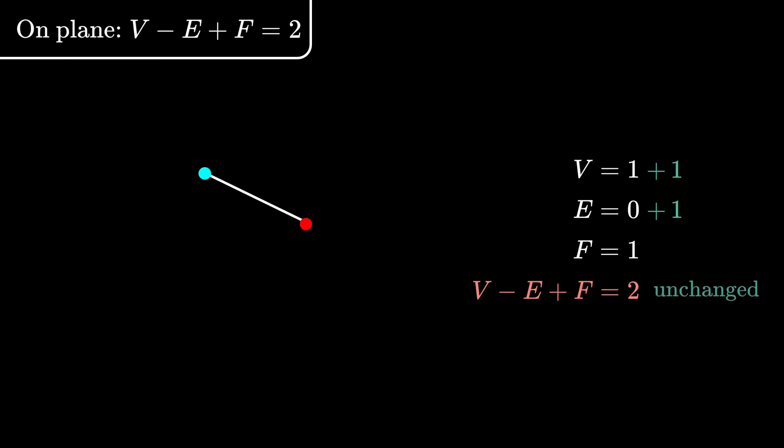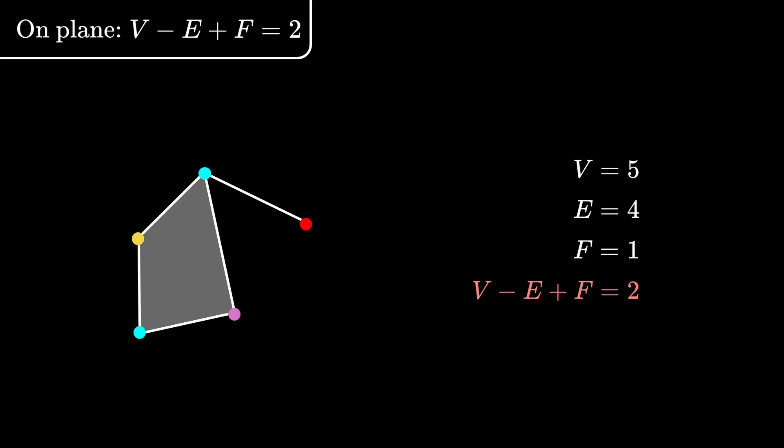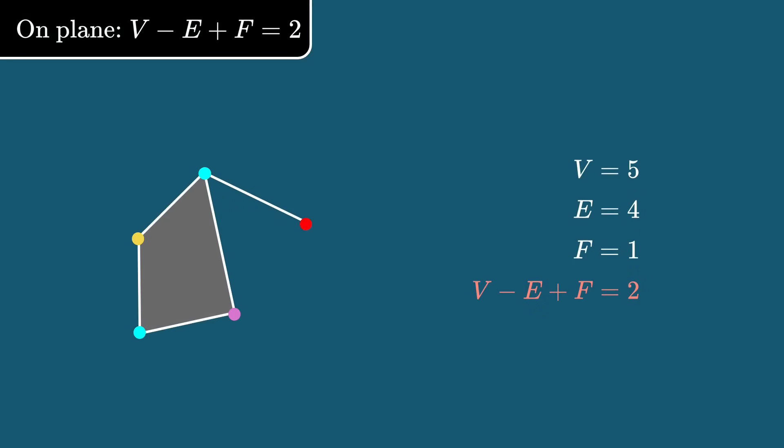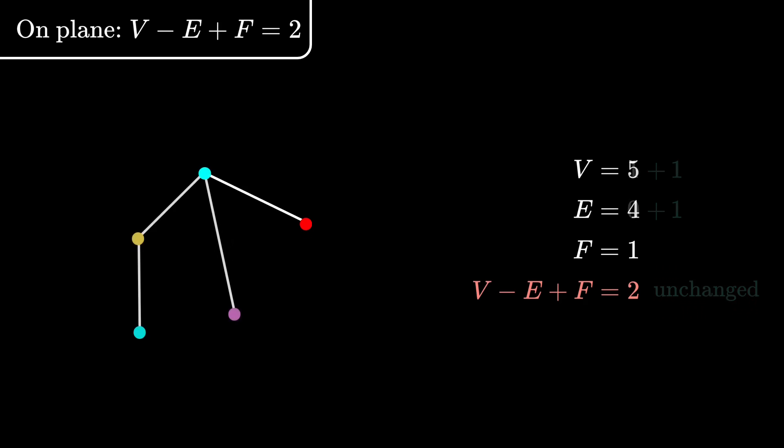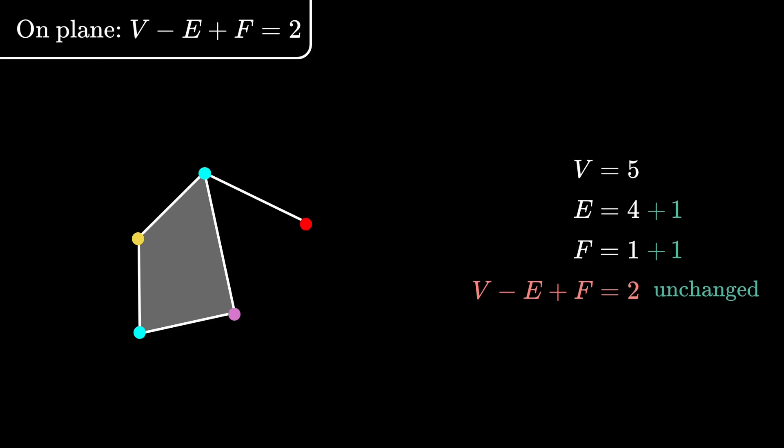The second possibility is that we add an edge to close off a region. Let's say we join the bottom blue and purple vertices, then we form a cycle to close off a region. In addition to the original face, we now have two faces. So F increases by 1, but of course E also increases by 1 because we have added an edge, but V remains unchanged, so V minus E plus F is still 2. So whether you connect to a new vertex or form a cycle, every time you add an edge, V minus E plus F remains unchanged.